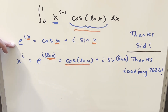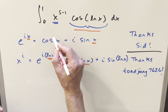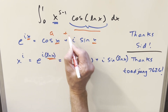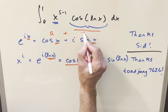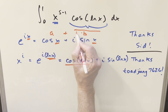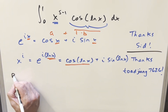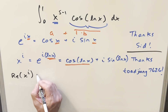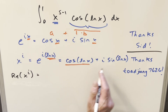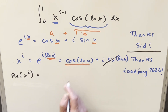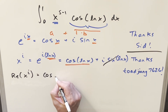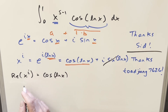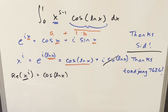We've used the fact that for e to the ix we've created a complex expression in the form a plus bi. So if we look at the real part of x to the i, that's going to leave off the imaginary part and we just get cosine ln x. We can take this and put it back in our integral, and it will work well with the existing base.